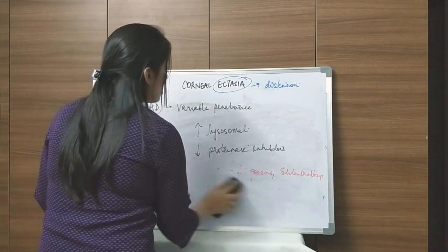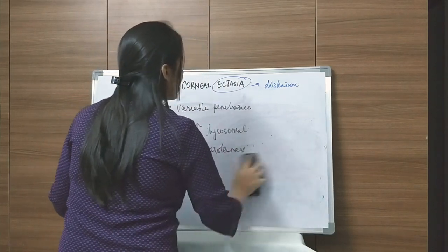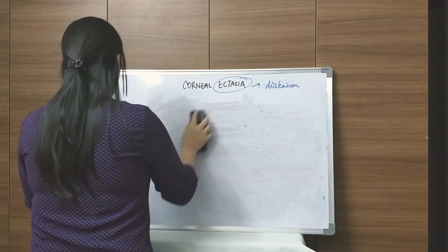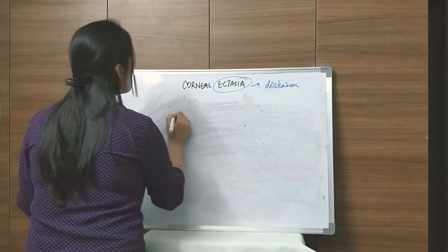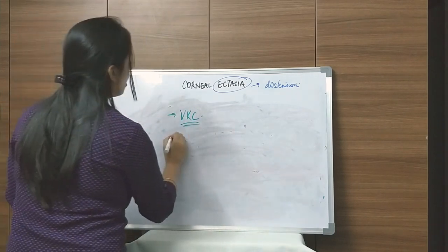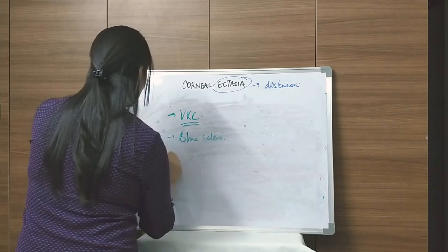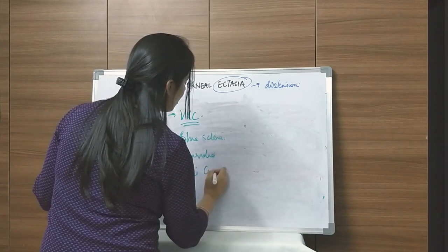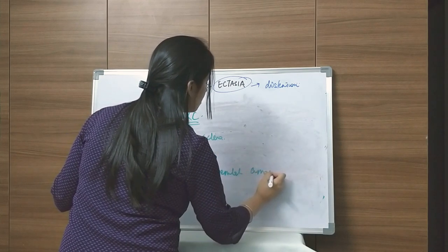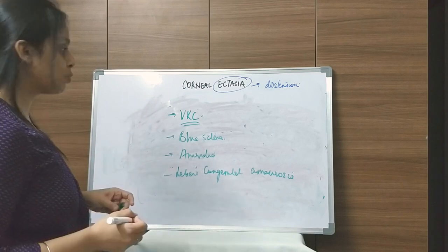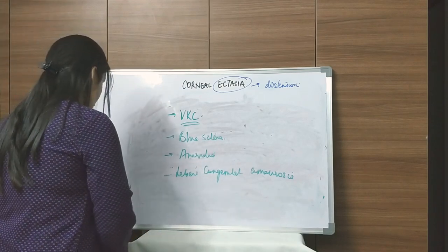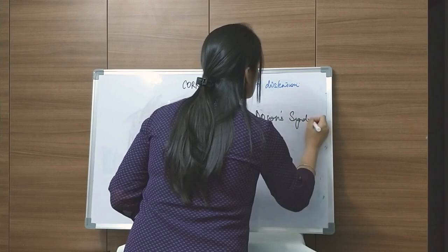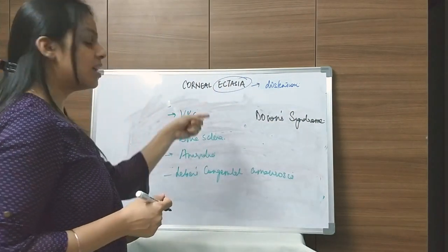There are certain ocular conditions also associated with keratoconus, which are important for MCQs. These include vernal keratoconjunctivitis, blue sclera, aniridia, Leber's congenital amaurosis, and Down syndrome. There is a striking coincidence between Down syndrome and keratoconus. These associations are all important MCQs.